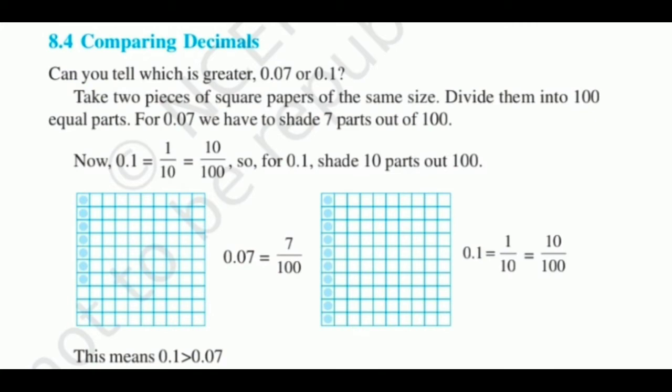0.07 or 0.1? Take two pieces of square papers of the same size, divide them into 100 equal parts. For 0.07 we have to shade 7 parts out of 100. Now, 0.1 can be written as 1 by 10.